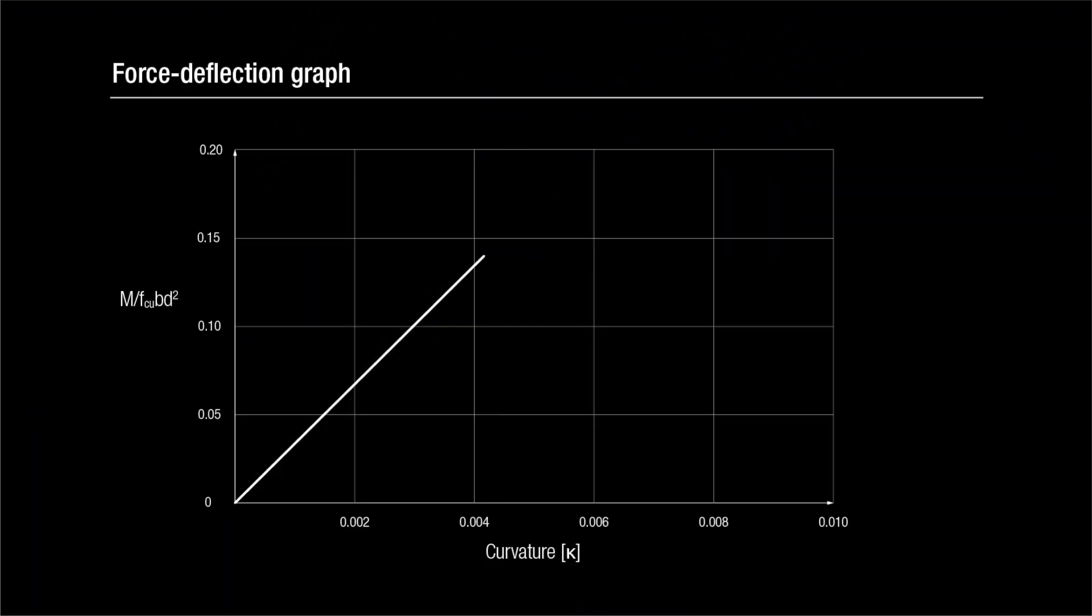The graph initially shows a linear relationship between applied load and vertical displacement at mid-span, and then all of a sudden there is that brittle shear failure.